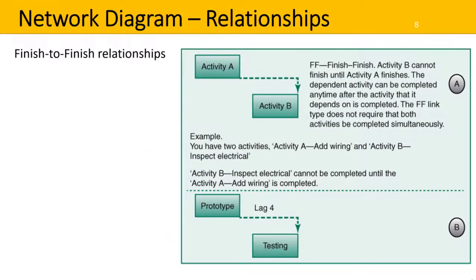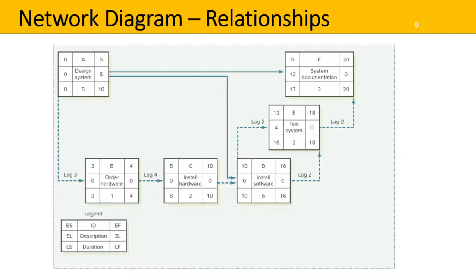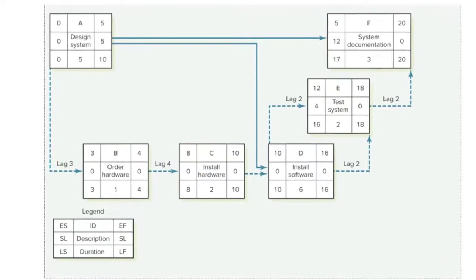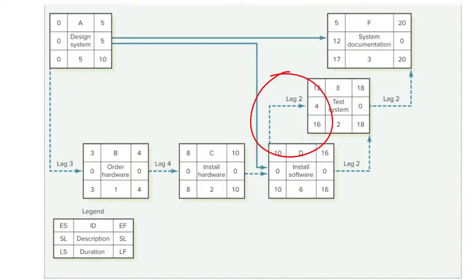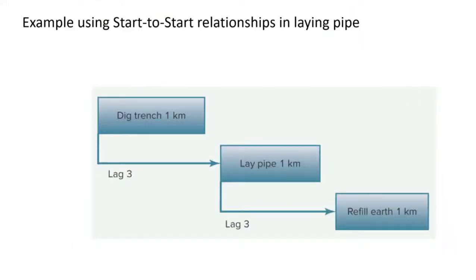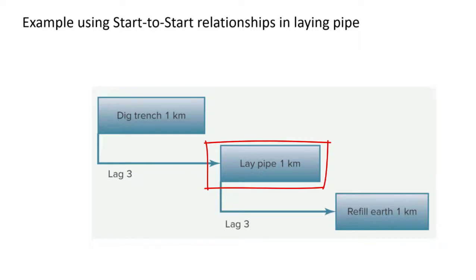Here it is in a network diagram. We can follow the dotted lines that indicate different lags. For example, there is a start-to-start lag of three days between activity A and B. When activity B is completed, there is a finish-to-start delay of four days. Between activity D and activity E, we have a start-to-start lag and also a finish-to-finish lag. Activity E and F have a finish-to-finish lag. Here is an example using start-to-start relationships in laying a pipe: first we dig the trench, there is a three-day lag before we can start laying the pipe, and then another three-day lag before we can refill the earth.